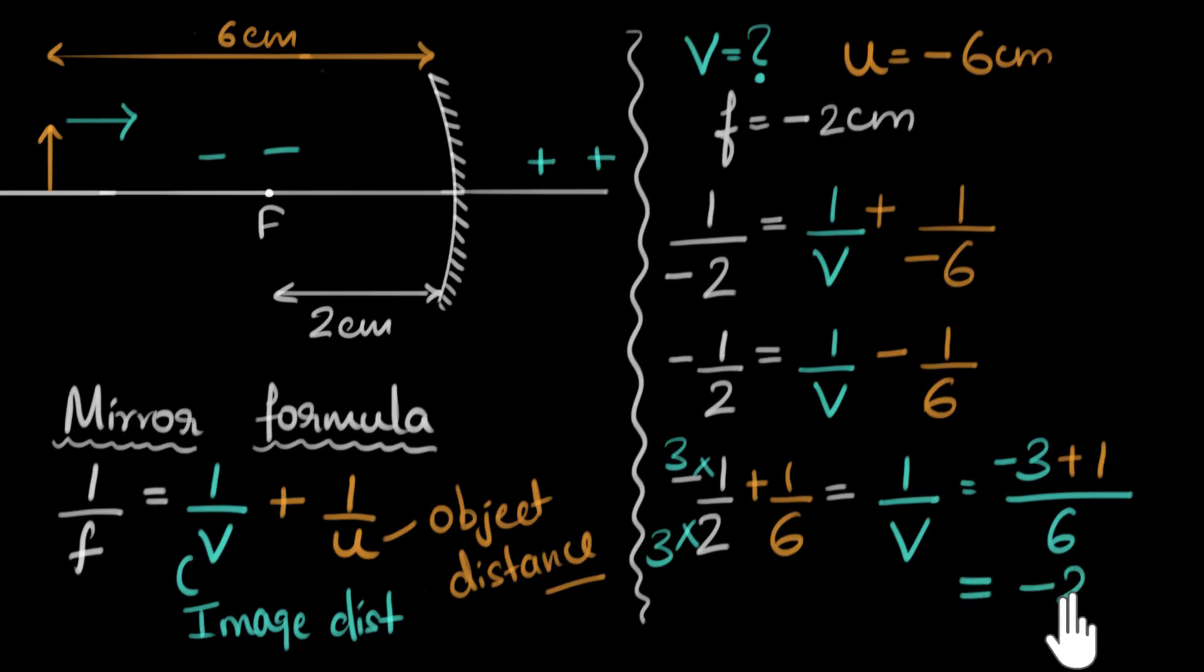Let's solve this. We have to add two fractions. We're going to make the common denominator. Two and six, LCM is six. So I'm going to multiply this by three. I'll get negative three plus one. That's going to be negative two. Minus two over six, and that's one over V. We can just cancel this. Two goes one times, two goes three times. So we have one over V equals negative one over three. We want V, so we'll do the reciprocal. V will be negative three centimeters.